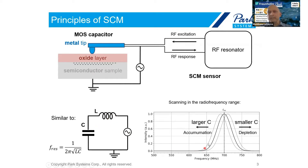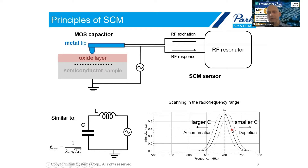The resonance peak we actually get is a function of the inductance, which in this case is constant, and the capacitance, which is changing with the depletion and accumulation beneath the surface. So as we're scanning, we're always operating at the same frequency. These resonance changes cause a change in the output of the sensor.